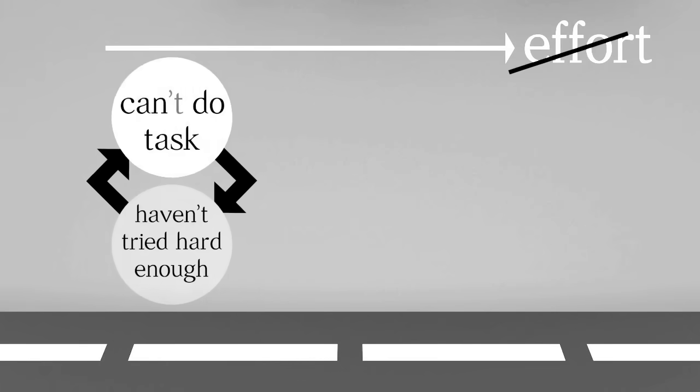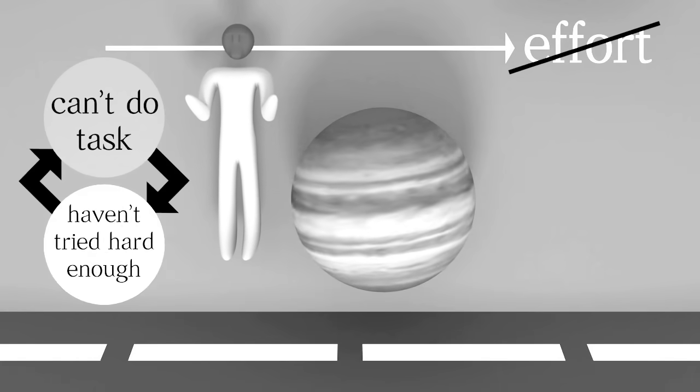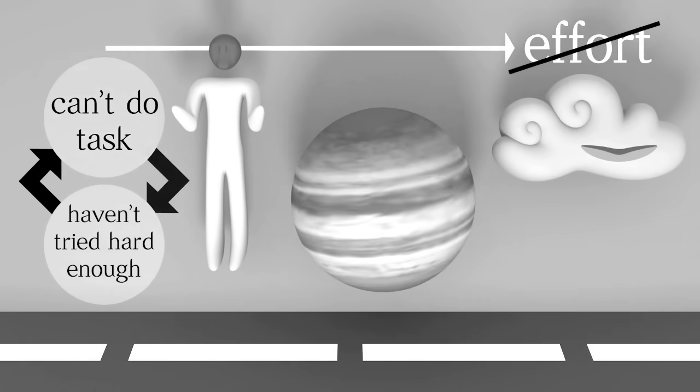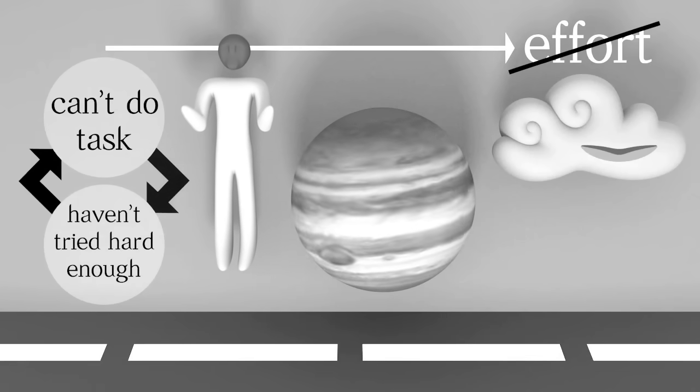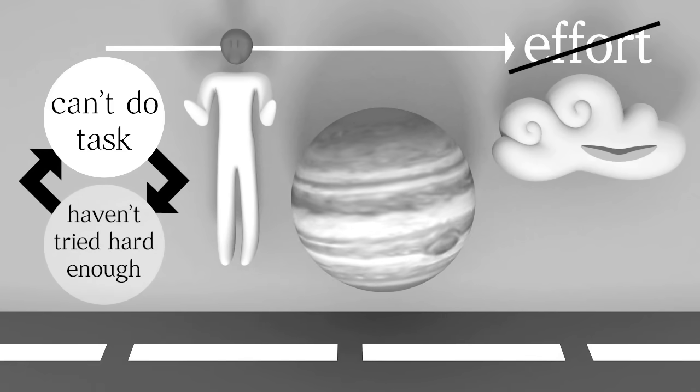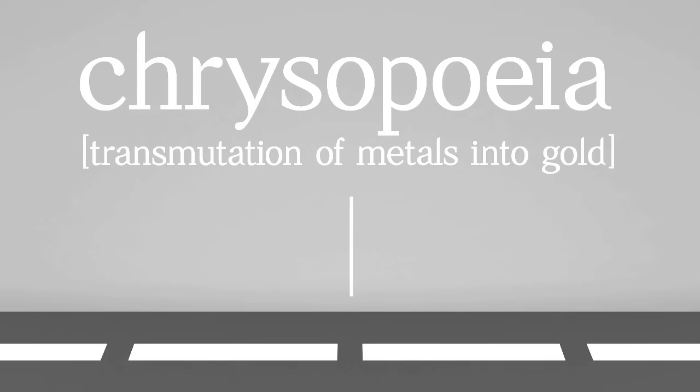But the haven't tried hard enough circle gets vicious in other scenarios. Without binocular vision, no amount of effort will unlock stereograms. Raw effort won't help any of us when it comes to goals like levitating, or hearing the rotation of Jupiter, or making a cloud smile. Sometimes it isn't that the goal's impossible, but that we become entrenched in an impossible method. Take the alchemist's dream of chrysopoeia—the transmutation of other metals into gold.